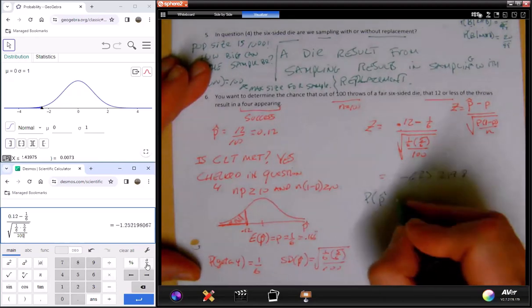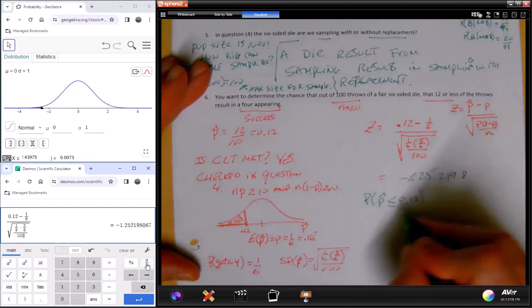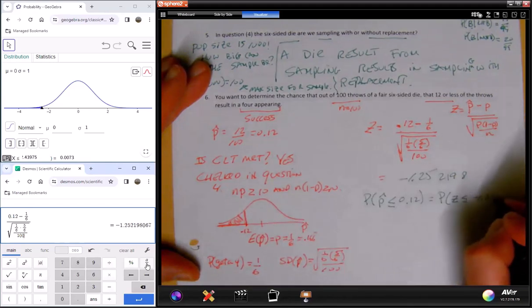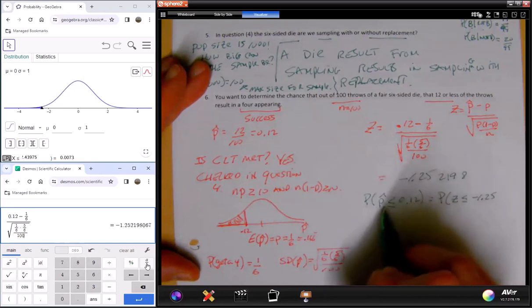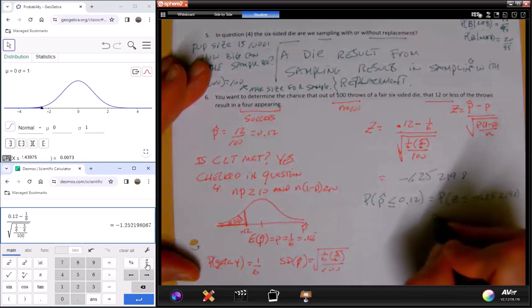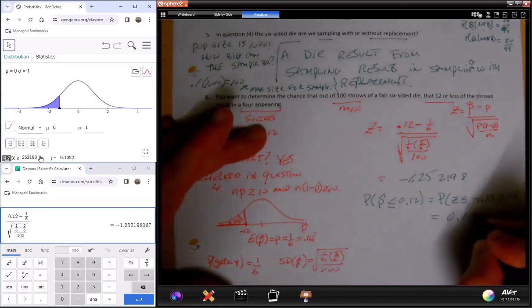What's the probability that p-hat is less than or equal to 0.12? Again, equality here will not matter now that I'm assuming it's normal - this is continuous. It doesn't matter for proportions if it's exact or less than, but I'm doing a normal model right now. Now I'll go into GeoGebra and enter that value - negative 1.25219.